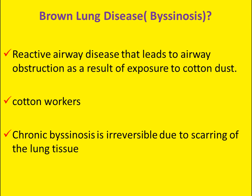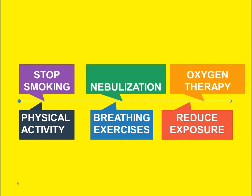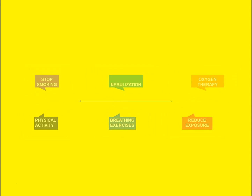Brown lung disease, also called byssinosis, is commonly seen in people working in the cotton industry. It is a restrictive airway disease leading to airway obstruction from exposure to cotton dust. Chronic byssinosis is irreversible due to scarring of lung tissue. Treatment includes stopping smoking, nebulization with bronchodilators, mucolytics, and steroids as needed, oxygen therapy, improving physical activity within the patient's limits, breathing exercises — starting with positioning to relieve breathlessness, then diaphragmatic breathing — and reducing exposure to cotton dust using personal protective devices.